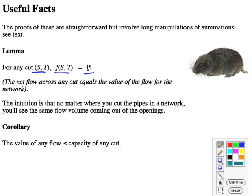The corollary of this is that the capacity of any cut is an upper bound on the value of any flow. And of course that will imply that if we find the minimum capacity cut, we've found the minimum upper bound on the value of any flow.